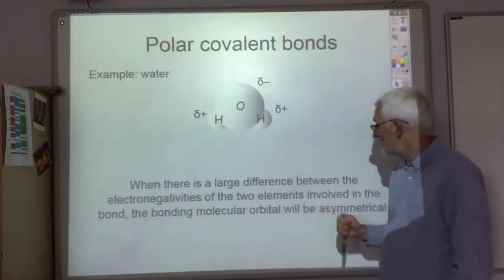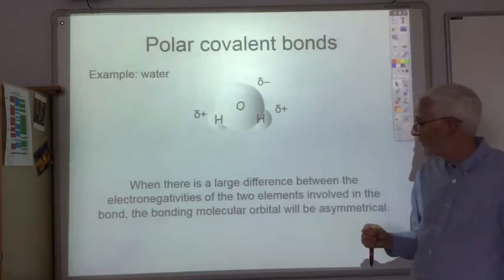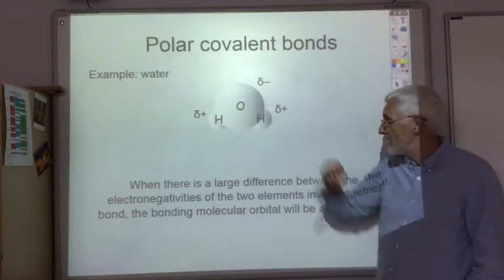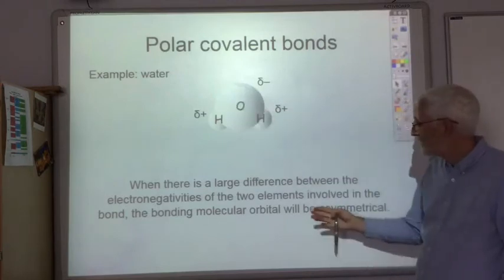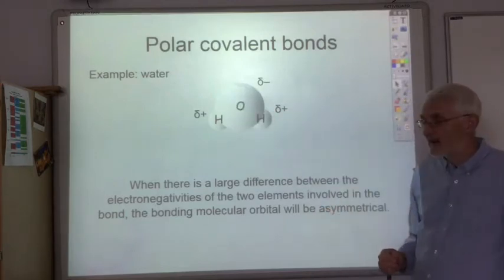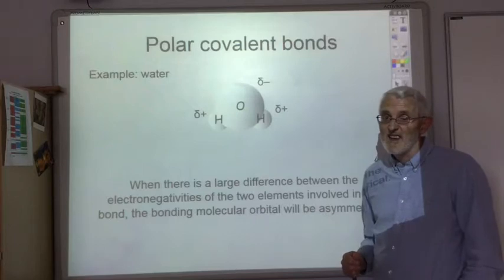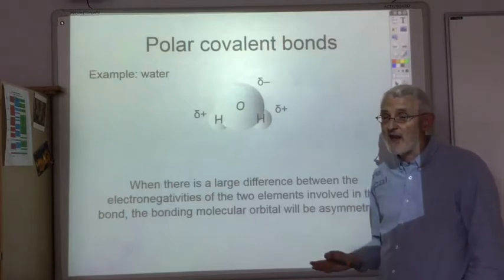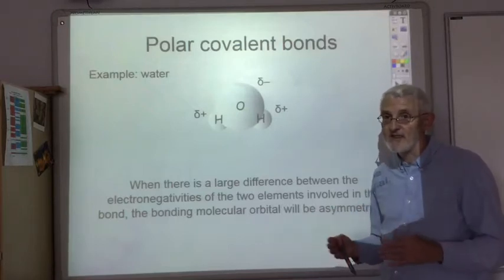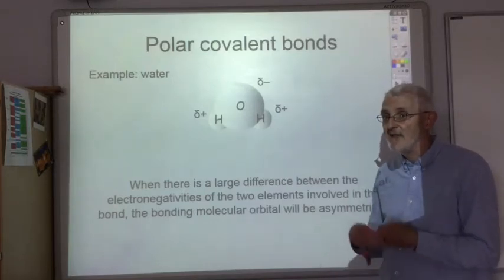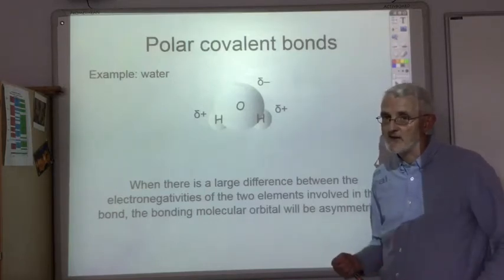When there's a large difference between the electronegativities of the two elements involved in the bond, the bonding molecular orbital will be asymmetric. And as the difference in polarity increases and you move towards an ionic substance, it gets even more asymmetric.